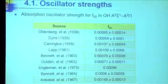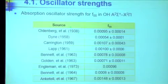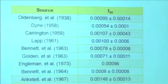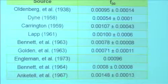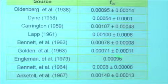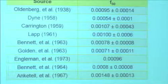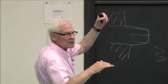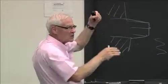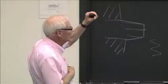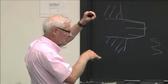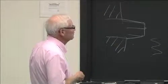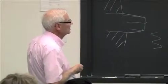Oscillator strengths — how well are they known? They come from experiments. It was first measured back around 1938; the latest measurement converges to 0.00096 — known to about 2%. How is it measured? You could populate an OH molecule and watch the decay rate in the absence of collisions — that gives you the Einstein A coefficient. You look at emission down from V'=0 to V''=0, and that gives you the oscillator strength. These are all experimental values.